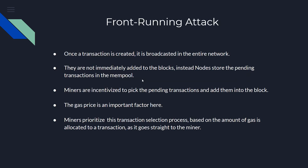Let's start with a quick refresher on front running attacks. A front running attack is when an adversary, having knowledge of queued transactions, places their own transaction which gets executed prior to a genuine transaction, thus impacting it. This happens by tricking the transaction selection process. Blockchain is a public decentralized ledger — all data flowing in the network is publicly accessible. When a transaction is signed and submitted, it is broadcasted to the entire network.